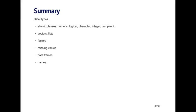That's a whirlwind tour of the different basic data types in R. We've talked about the atomic classes — numeric, logical, character, integer, and complex vectors — and how vectors can only have elements of the same class. The main exception is lists, which can have elements of different classes. There are factors for coding categorical data, both ordered and unordered. There are missing values represented by NAs and NANs. Data frames are used to store tabular data where each column can be a different class. And all R objects can have names, which is useful for creating self-describing data.